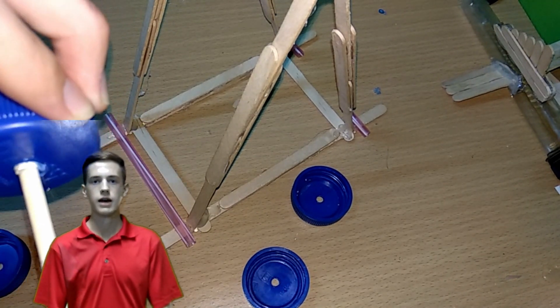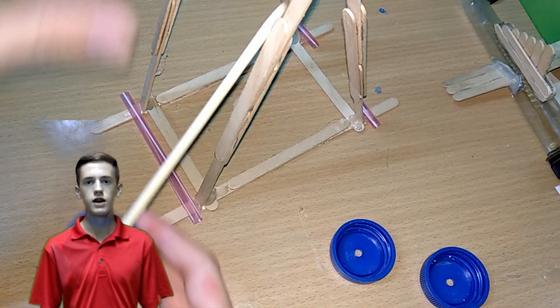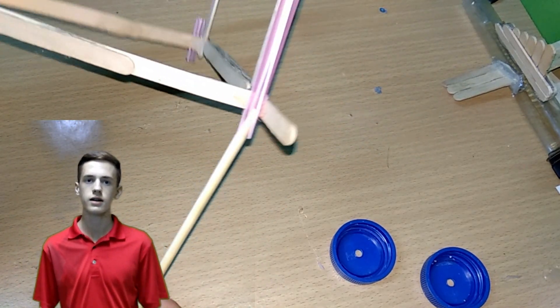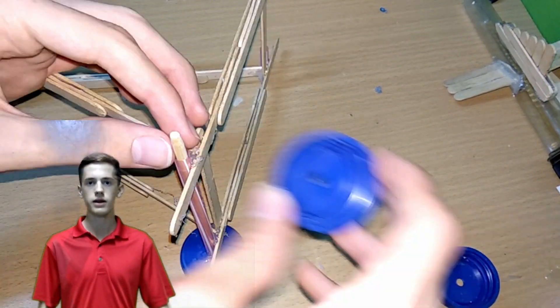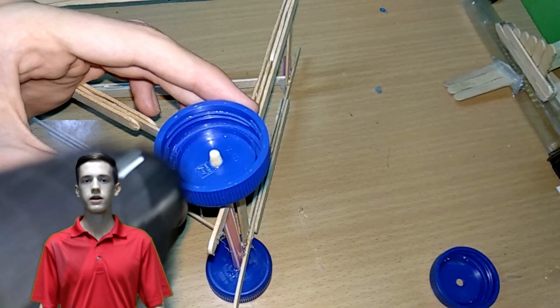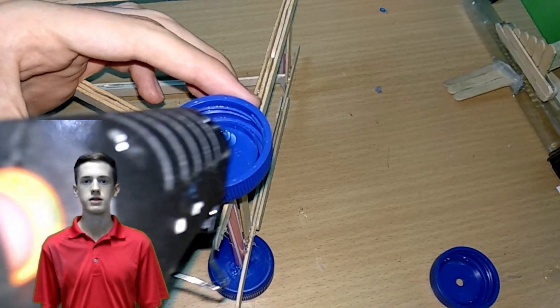Then glue a bottle cap onto one end of each of the chopsticks. Then slide the other end through the straws on the front and the rear and then glue the other two bottle caps onto them.